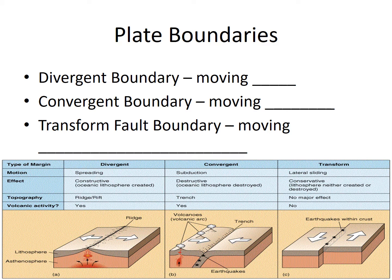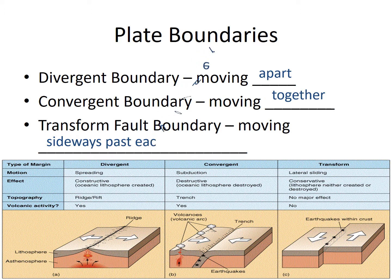So let's look at our plate boundaries. First we have a divergent boundary, which is moving apart. A convergent boundary is moving together. And a transform fault boundary is moving sideways past each other. This should be something you probably remember from middle school, but we're going to go a little more in-depth into these types of boundaries and what they do.